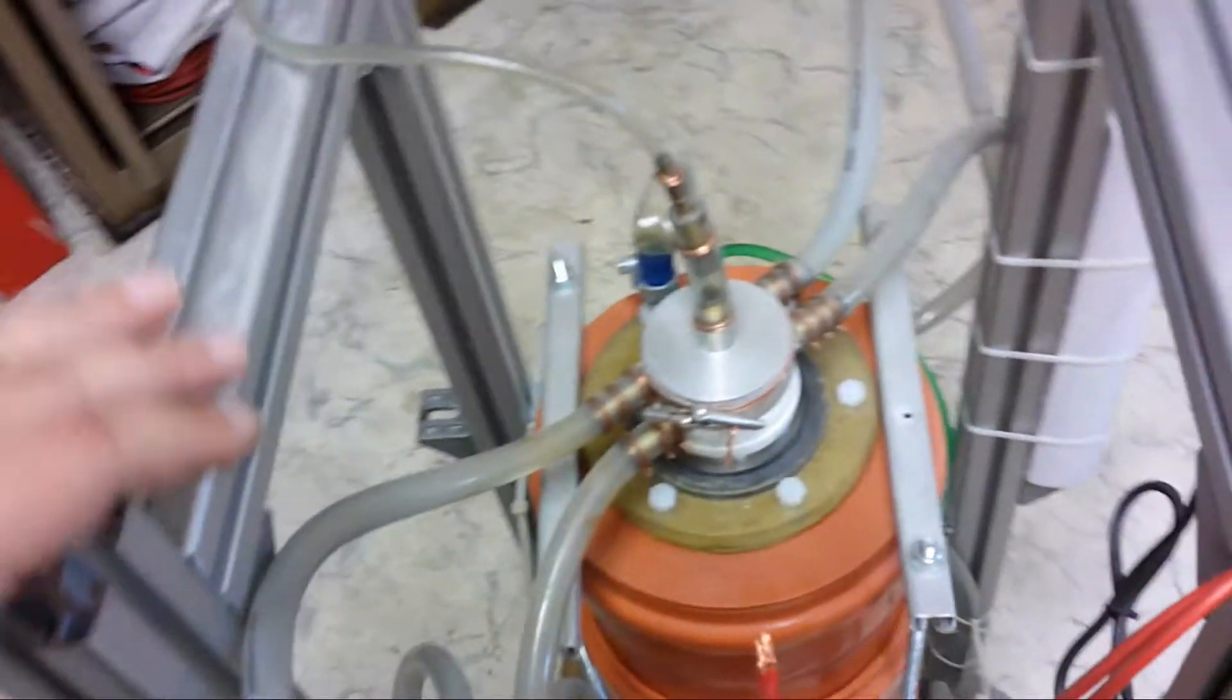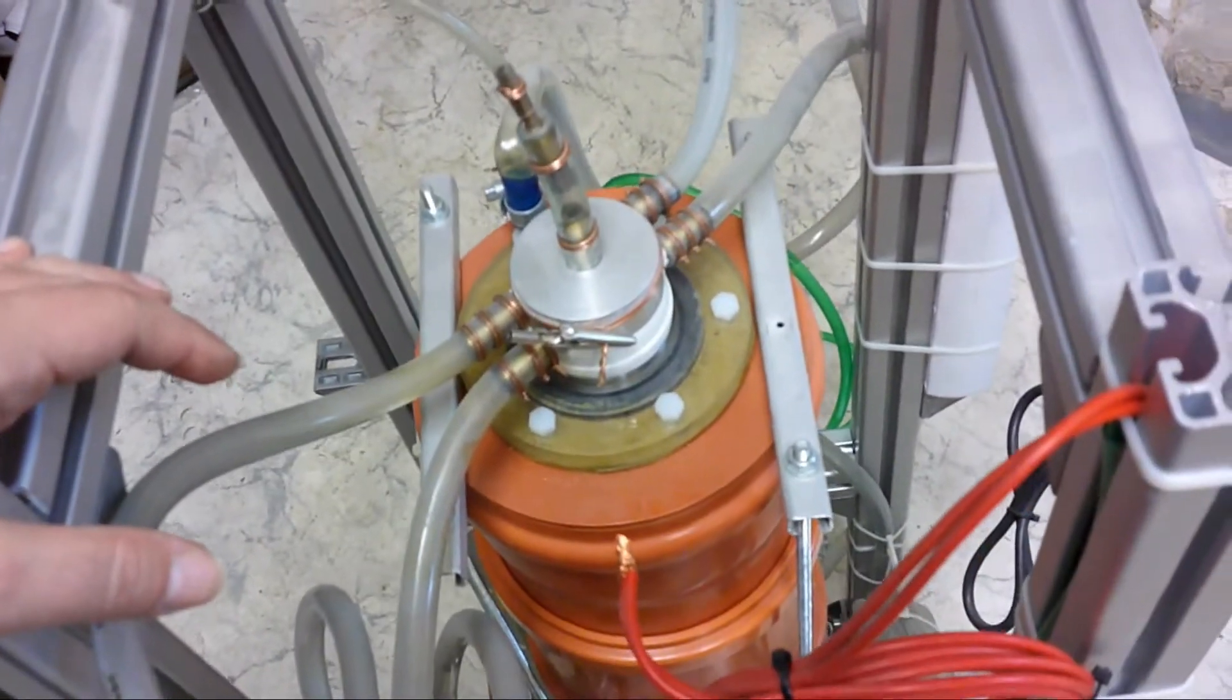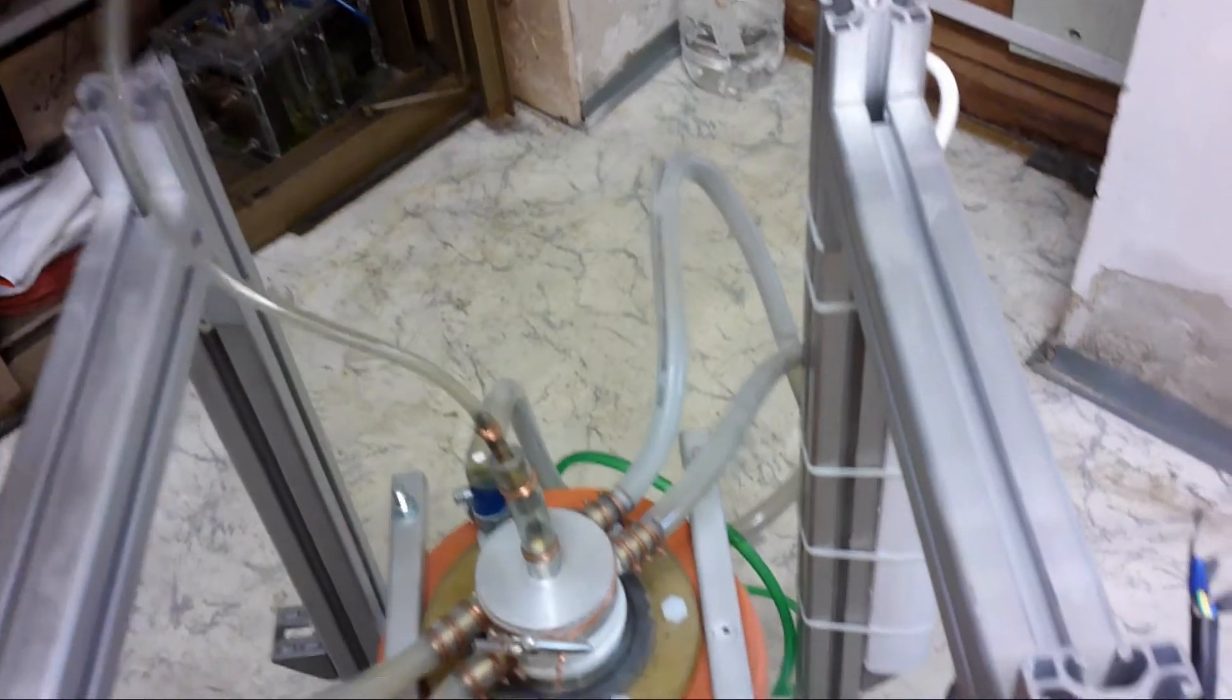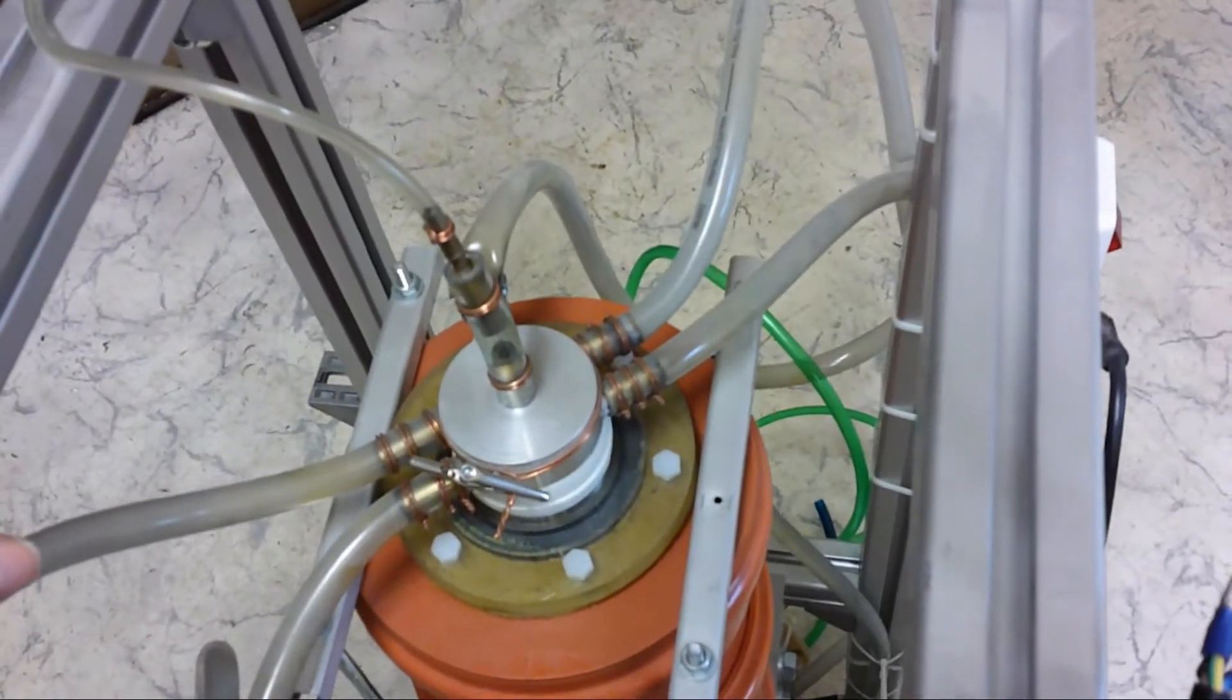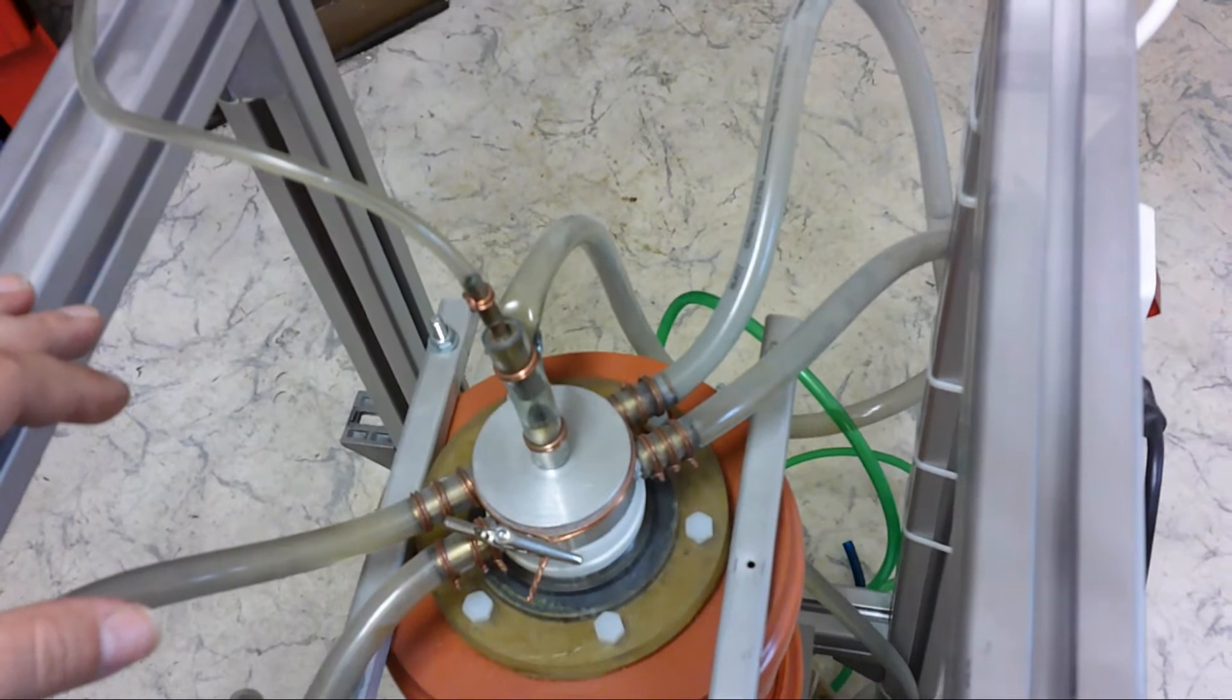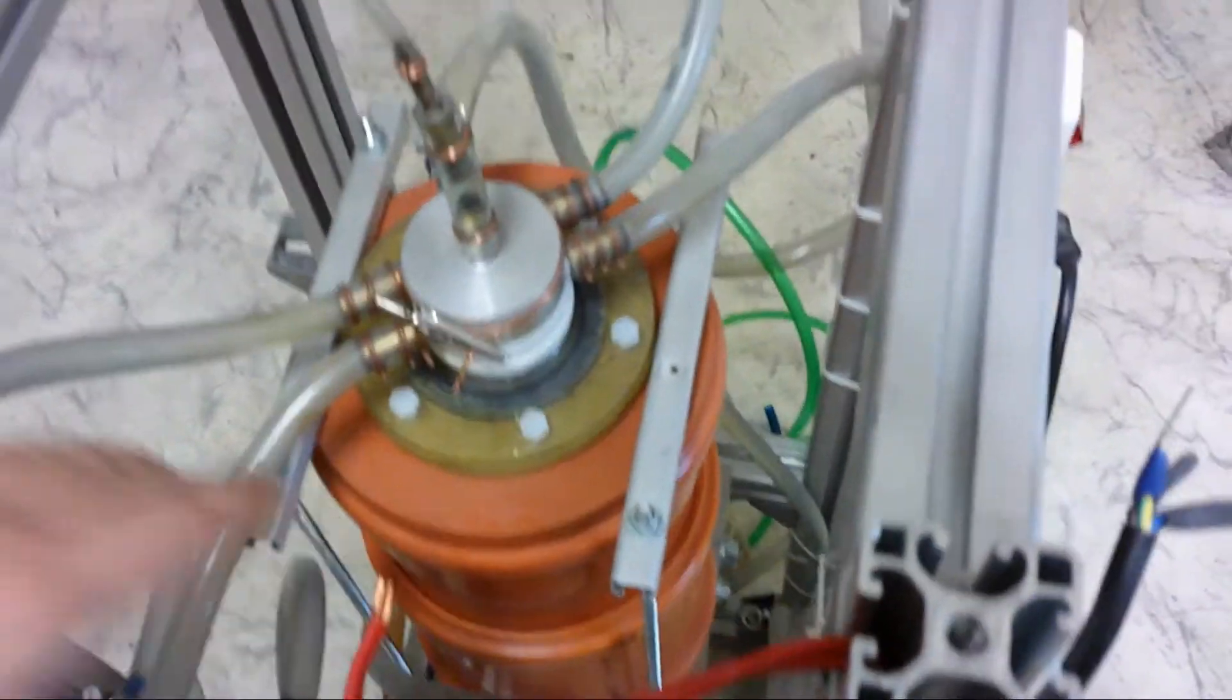And here you can see the actual plasma cell. That was the inlet of the air from the top. The lid of it was water cooled because all the heat of the plasma was going up and heating up the upper part. So this was water cooled as well as the whole thing was water cooled.